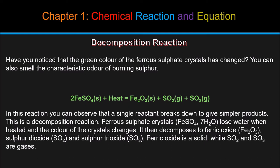You can also smell the characteristic odor of burning sulfur. The chemical equation for the reaction will be 2FeSO4(S) plus heat equals Fe2O3(S) plus SO2(G) plus SO3(G). In this reaction you can observe that a single reactant breaks down to give simpler products. This is a decomposition reaction. Ferrous sulfate crystals, FeSO4·7H2O, lose water when heated and the color of the crystals changes. It then decomposes to ferric oxide, Fe2O3, sulfur dioxide, SO2, and sulfur trioxide, SO3. Ferric oxide is a solid, while SO2 and SO3 are gases.